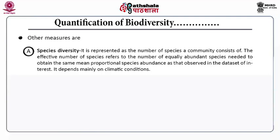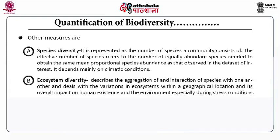Thereafter comes species diversity. It is represented as the number of species a community consists of. The effective number of species refers to the number of equally abundant species needed to obtain the same mean proportional species abundance as that observed in the data set of interest. It entirely depends on the climatic conditions.